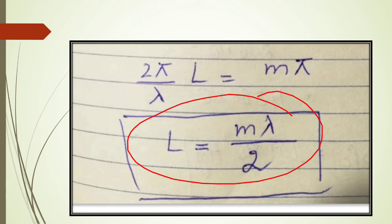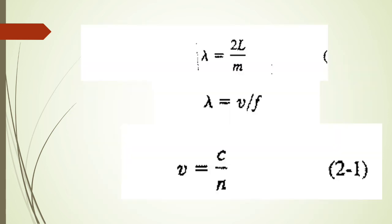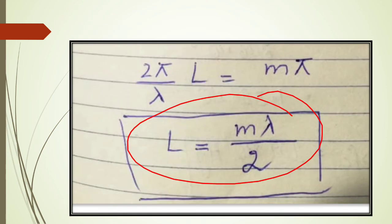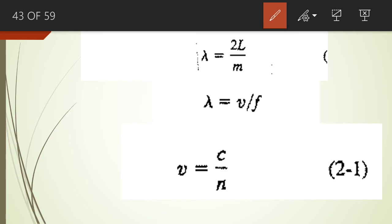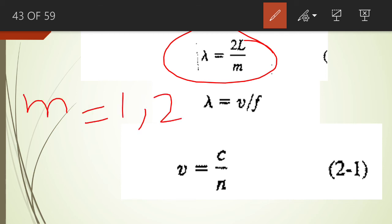We calculate the length of the amplifying cylinder using this equation. The cylinder — which is the resonant cavity, the laser, the optic oscillator — has its length determined by L = mλ/2. The resonance will take place inside this resonant cavity when λ equals 2L divided by m, where m = 1, 2, 3, 4, and so on.